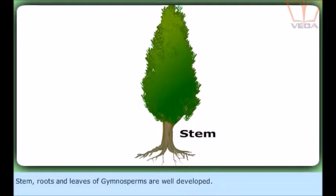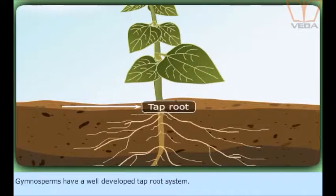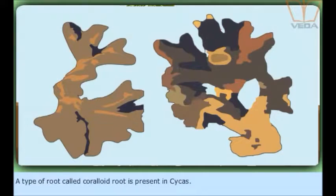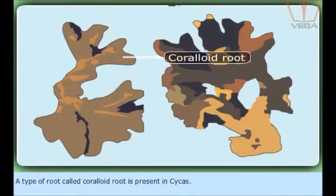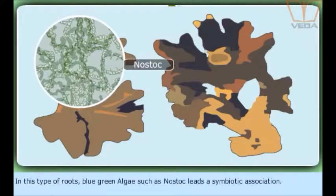Stem, roots and leaves of gymnosperms are well developed. Gymnosperms have a well-developed tap root system. A type of root called coralloid root is present in Cycas. In this type of roots, blue-green algae such as Nostoc leads a symbiotic association.